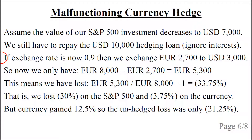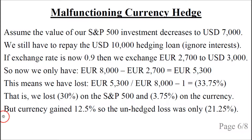In order to repay the 10,000 US dollars, we exchange 2,700 euros back to 3,000 US dollars and repay the loan. So we now have 8,000 euros minus 2,700, which gives 5,300 euros — a loss of 33.75 percent. This loss consists of 30 percent on the S&P 500 and 3.75 percent on the currency. But in reality the currency gained 12.5 percent, so if we had not used a hedge at all, our net loss would only have been 21.25 percent.